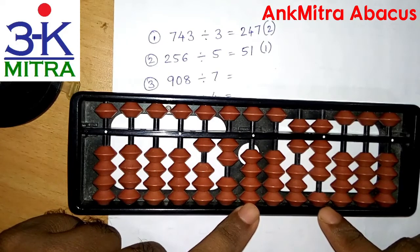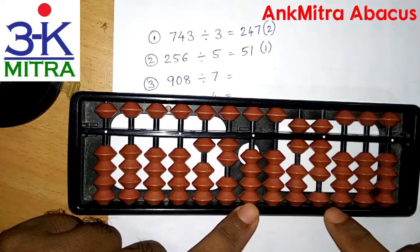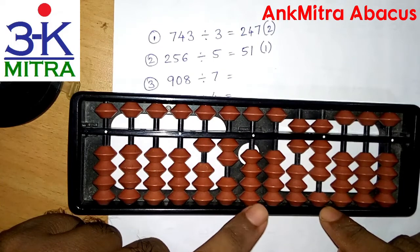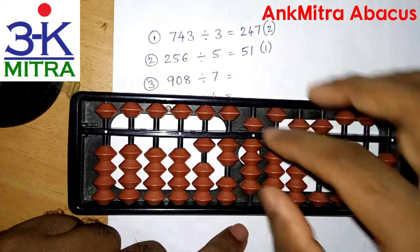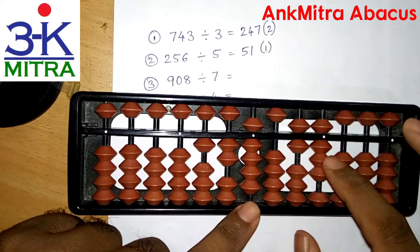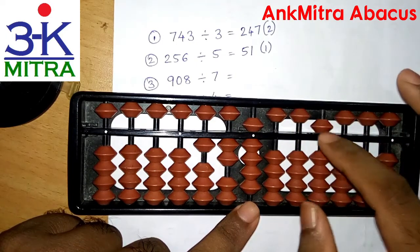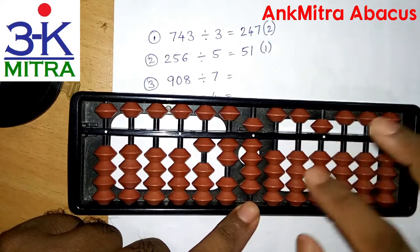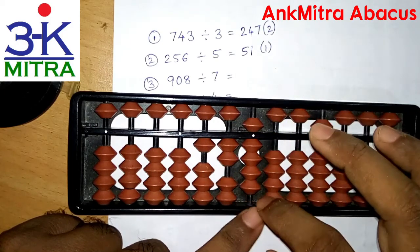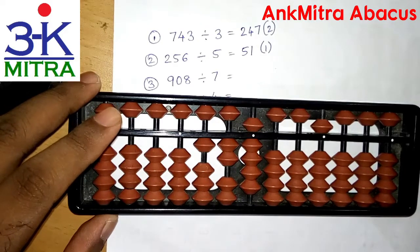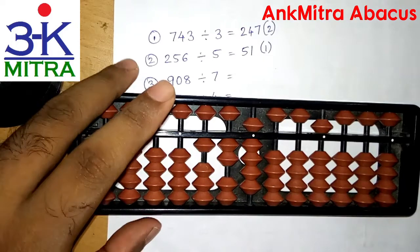Moving one rod further — the final rod of both the question set and the answer set. The number on the question set is 68. Reciting the table of 7, we get 9 times 7 which is 63. So we take 9 on the corresponding units place rod of the answer set, then subtract 63 — 9 times 7 being 63 — from the question set. The division is complete. The answer for 908 divided by 7 is 129 as the quotient and 5 as the remainder.